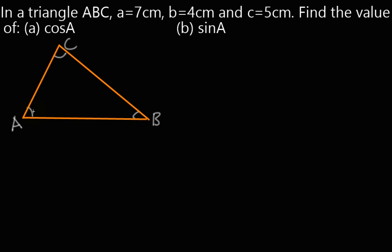The side opposite to angle A is going to be a which is 7cm. The side opposite to angle B is going to be b which is 4cm. And the side opposite to angle C is going to be c which is 5cm.